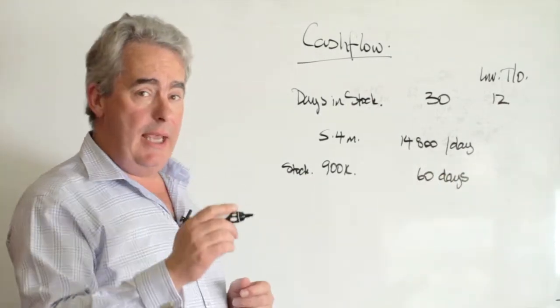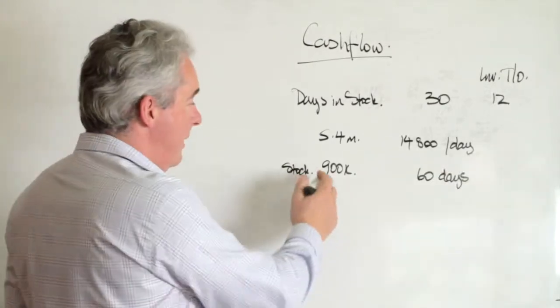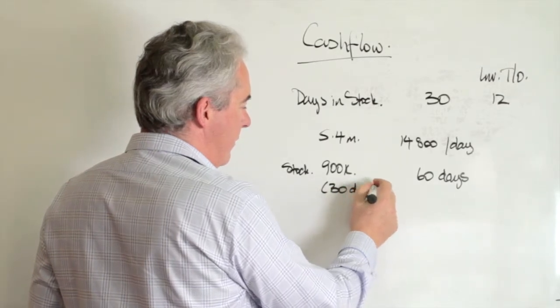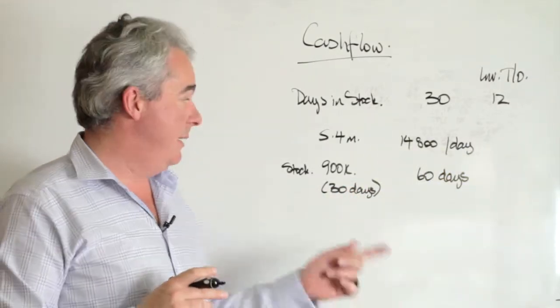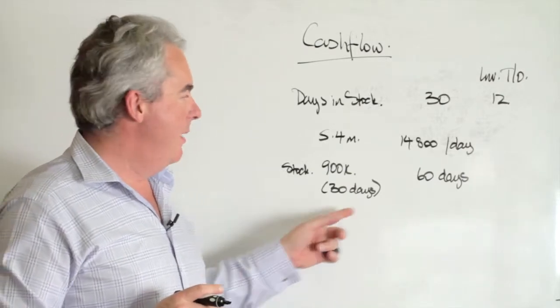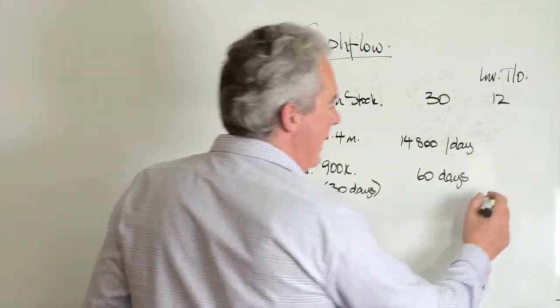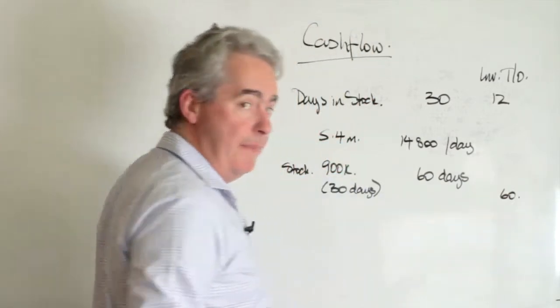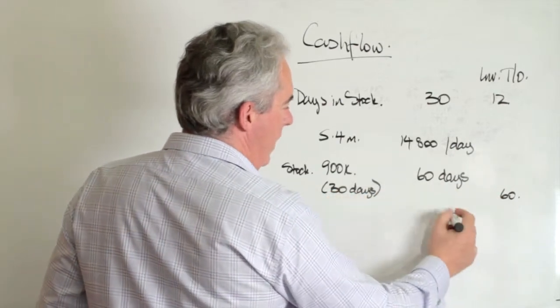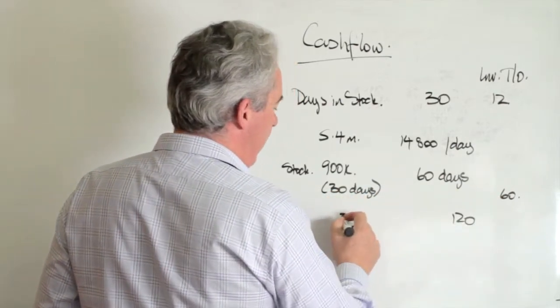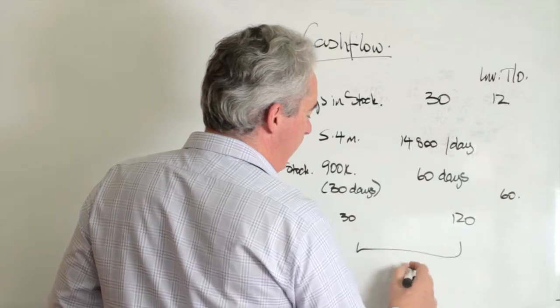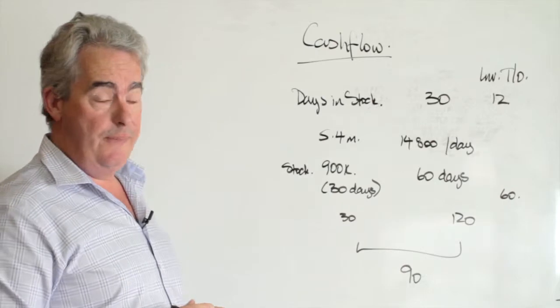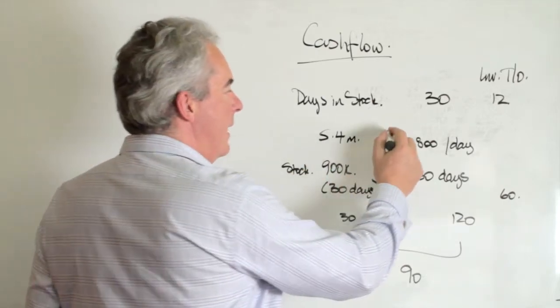Now what was happening with the cash flow: all this stock they'd purchased was on 30 days payment terms. So they had to pay their suppliers in 30 days. They were holding 60 days worth of stock and their debtor days were 60 days. So we've got 120 days there and 30 days there. The net effect was they were funding 90 days on $900,000 worth of stock.